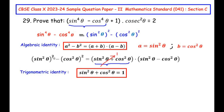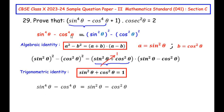So sin⁴θ - cos⁴θ equals 1 × (sin²θ - cos²θ), which is simply sin²θ - cos²θ. Now let us come back to the main question. We are going to replace sin⁴θ - cos⁴θ with the result we just obtained.